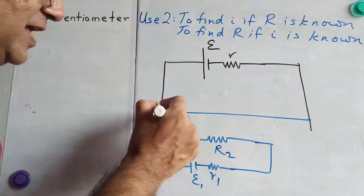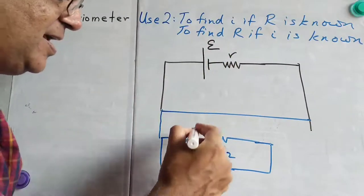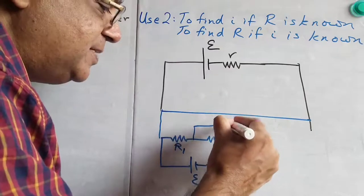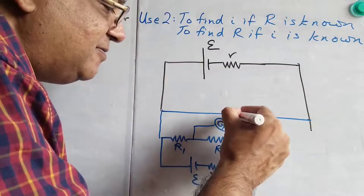So, we connect the plus of this to the plus of that. So, this is connected. And here, we connect a galvanometer, and we find the balance point.